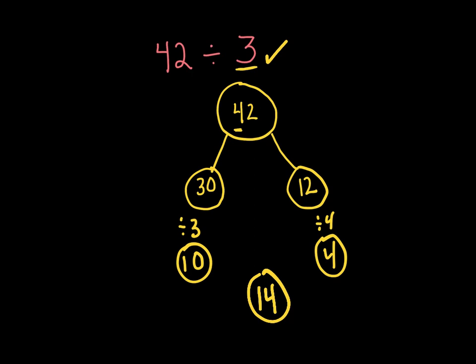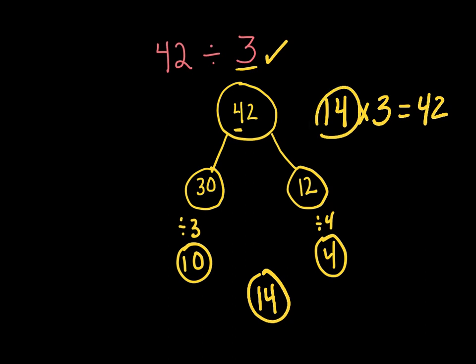We can also show this by saying 14 times 3 does give you 42. So 14 and 3 are both factors of 42.